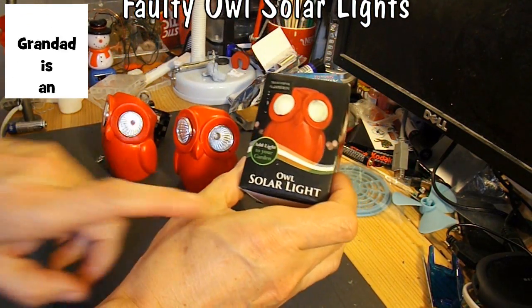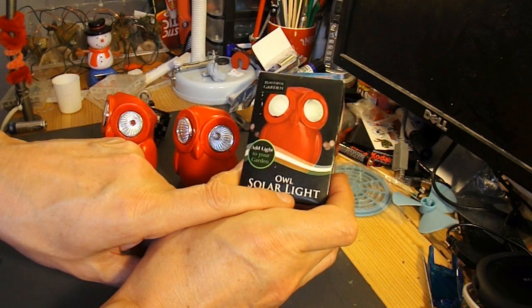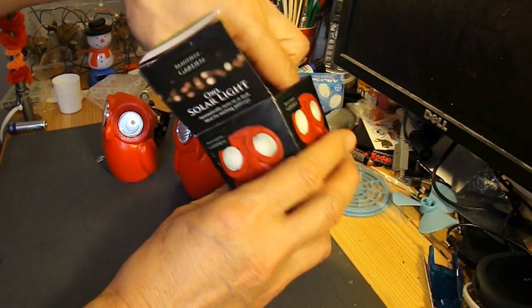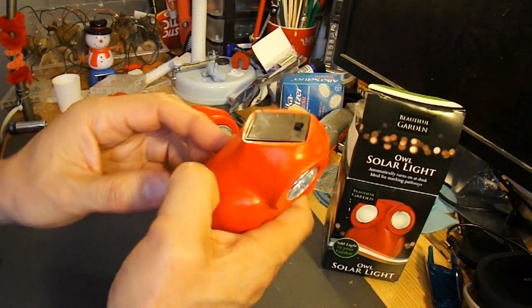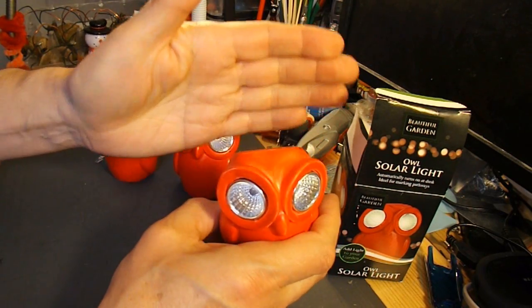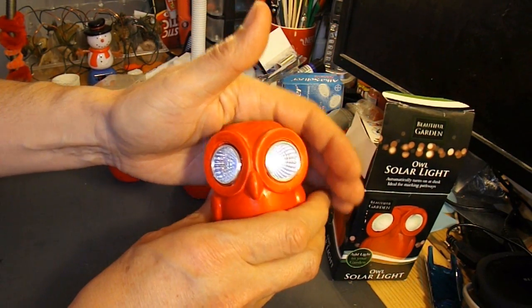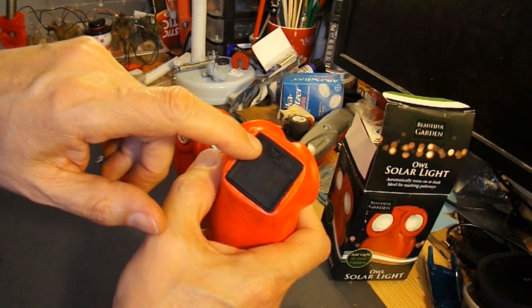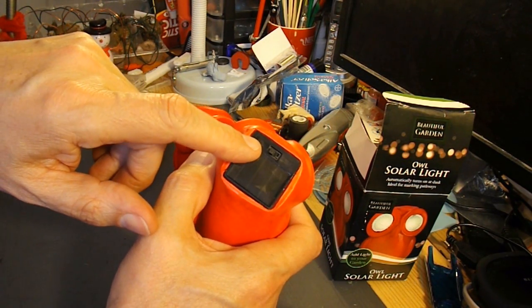I bought these owl solar lights in Poundland. I bought this one first, had it for a little while, sits in my window. The lights come on when it gets dark, solar panel on the back, got a little switch on there for switching it on and off.